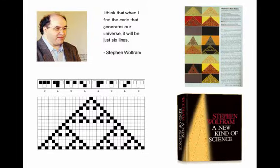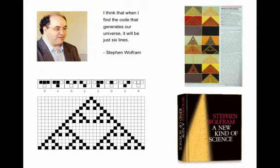There are people who believe the universe is a giant quantum computation. One figure who believes this is Stephen Wolfram — a brilliant person. He's worked out something called Cellular Automata: very simple rules can make very complex things. He believes some very simple rules make our universe. He says, 'I think when I find the code that generates our universe, it'll be just six lines.' So these are different worldviews.